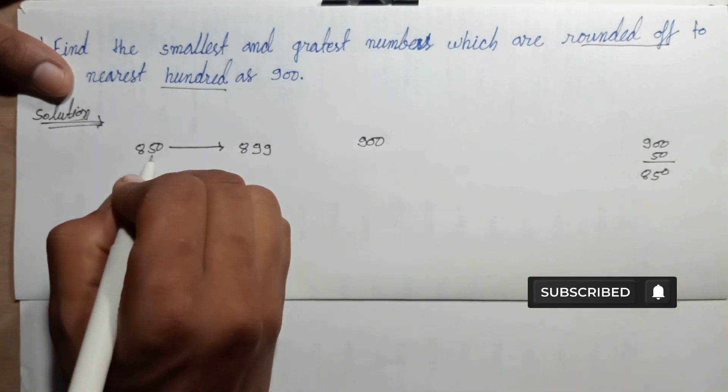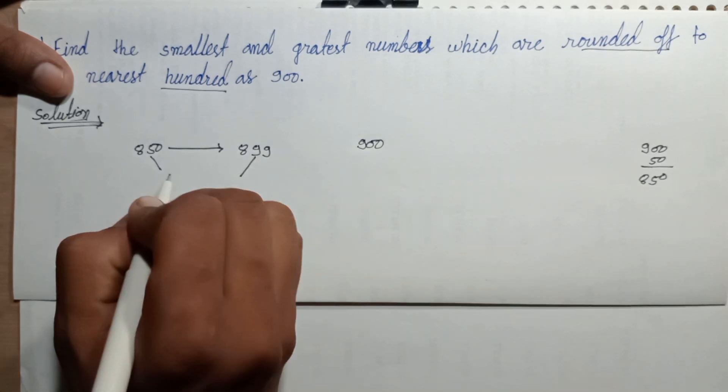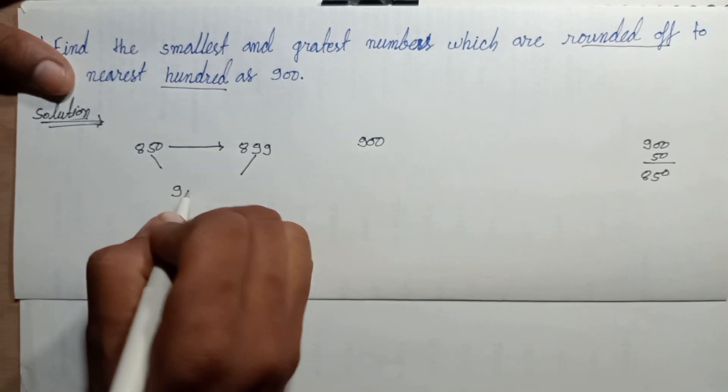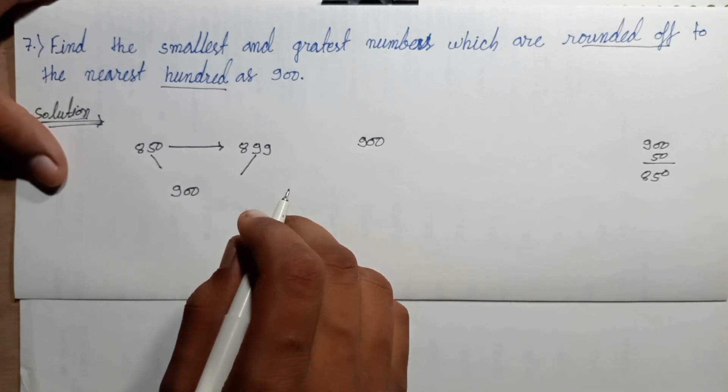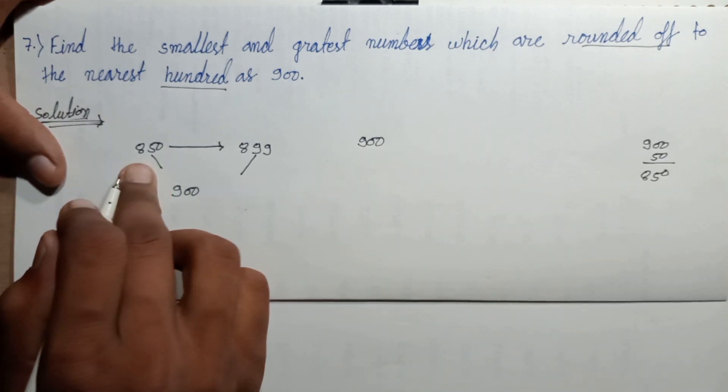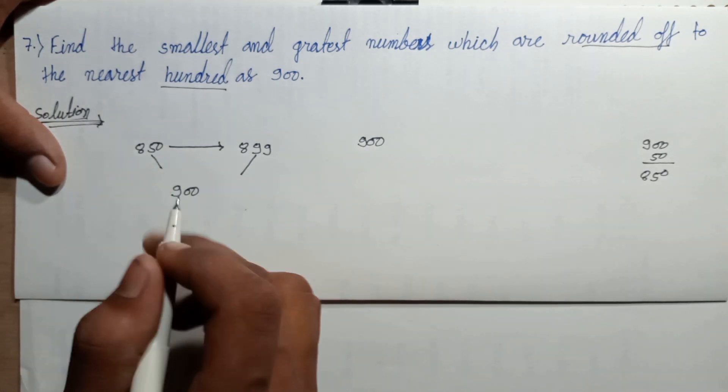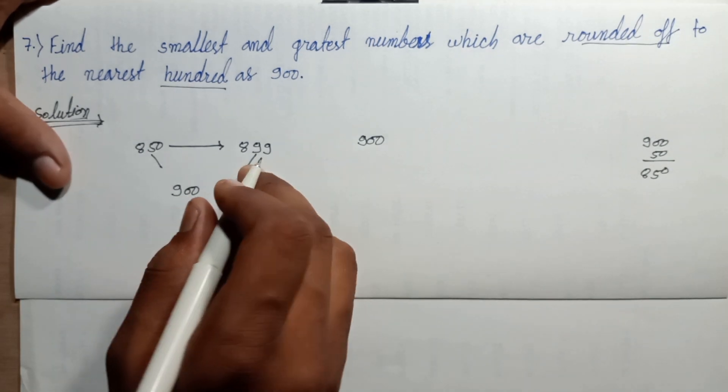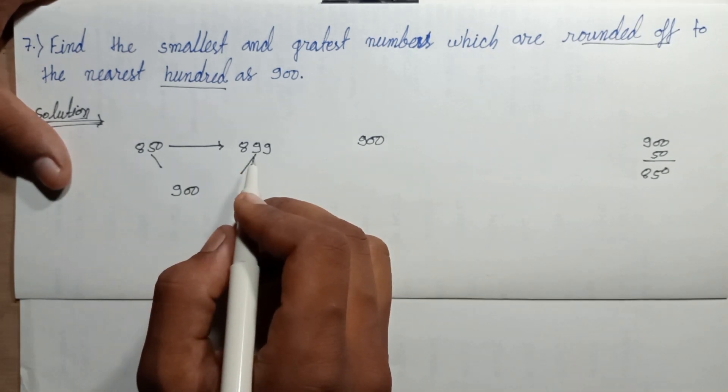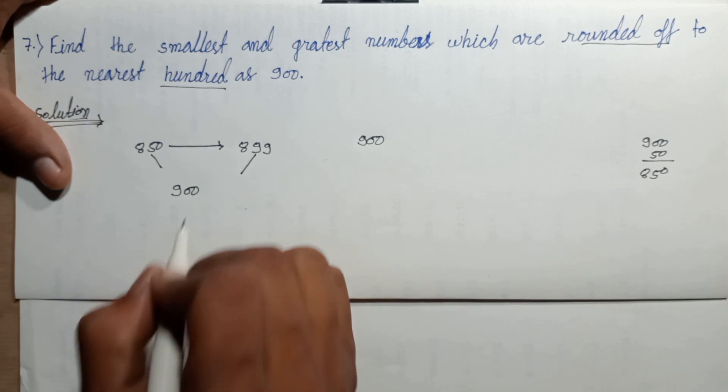Rounded of this number is nine hundred. Rounded of eight hundred fifty is nine hundred. Rounded of eight hundred ninety nine is nine hundred.